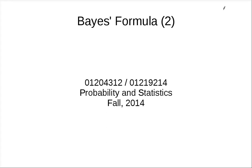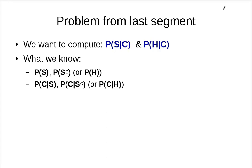Hi. Let's continue our discussion on the Bayes formula. In the previous segment, we left this as a problem. We want to compute the probability that we have a spam email, given that we find out that the email contains the word 'cheap'. What we know is the probability that a random email is spam, and the probability that a random email is not spam — so it's a ham.